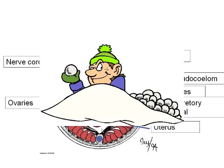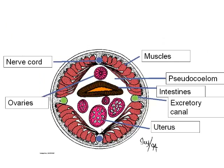Looking at a cross-section, we have a pseudocoelom — not quite a true coelom, because there's a little bit of space between the inner layer, which would be similar to the gastrointestinal cavity of the flatworms, but this one is a true intestine. There's an excretory canal — so no flame cells — plus uterus, ovaries, and a nerve cord.